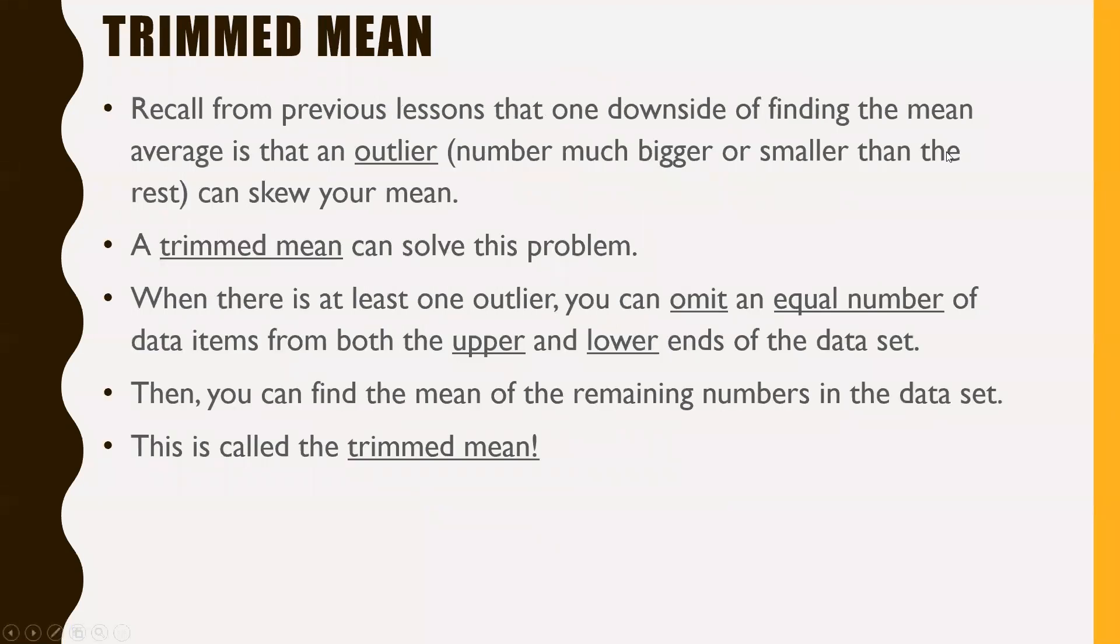For trimmed mean, recall from previous lessons that one downside of finding the mean average is that an outlier, a number much bigger or smaller than the rest, can actually skew your entire mean. For instance, with a bunch of people's incomes, if one person was making way more money than everyone else, that outlier would skew the mean and make it way higher than it should have been. A trimmed mean can solve this problem.